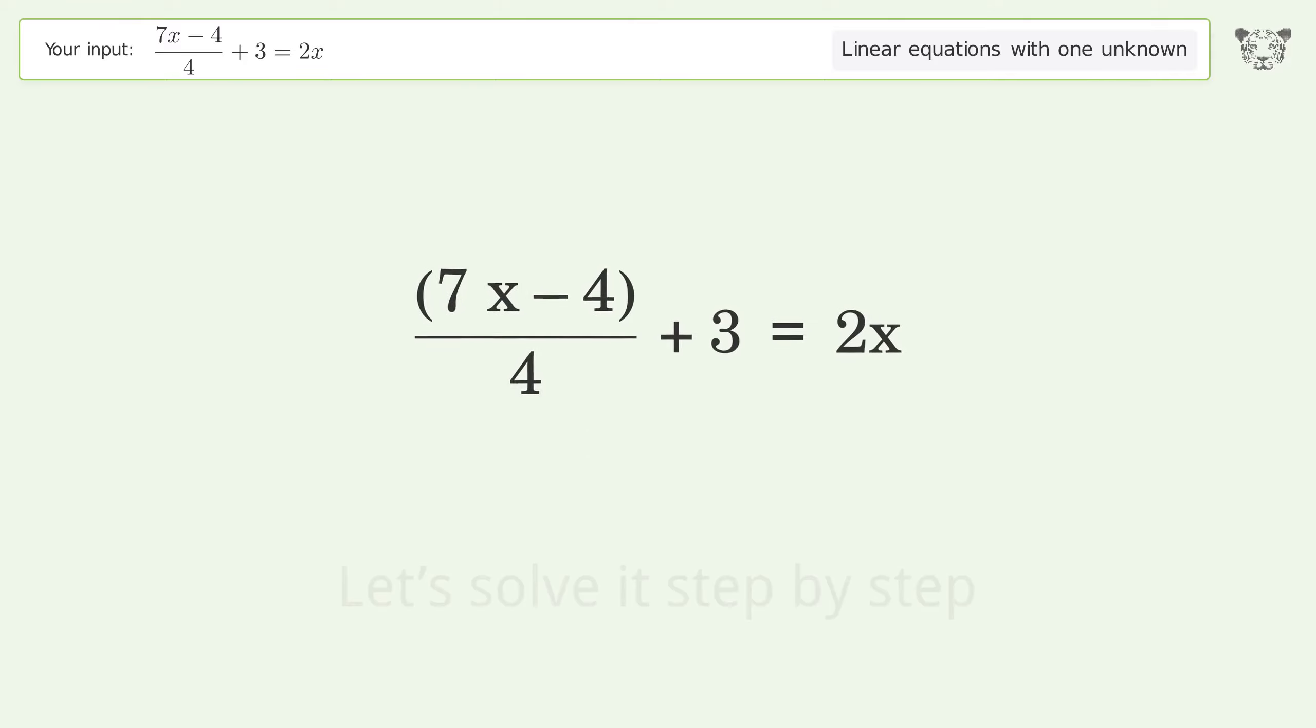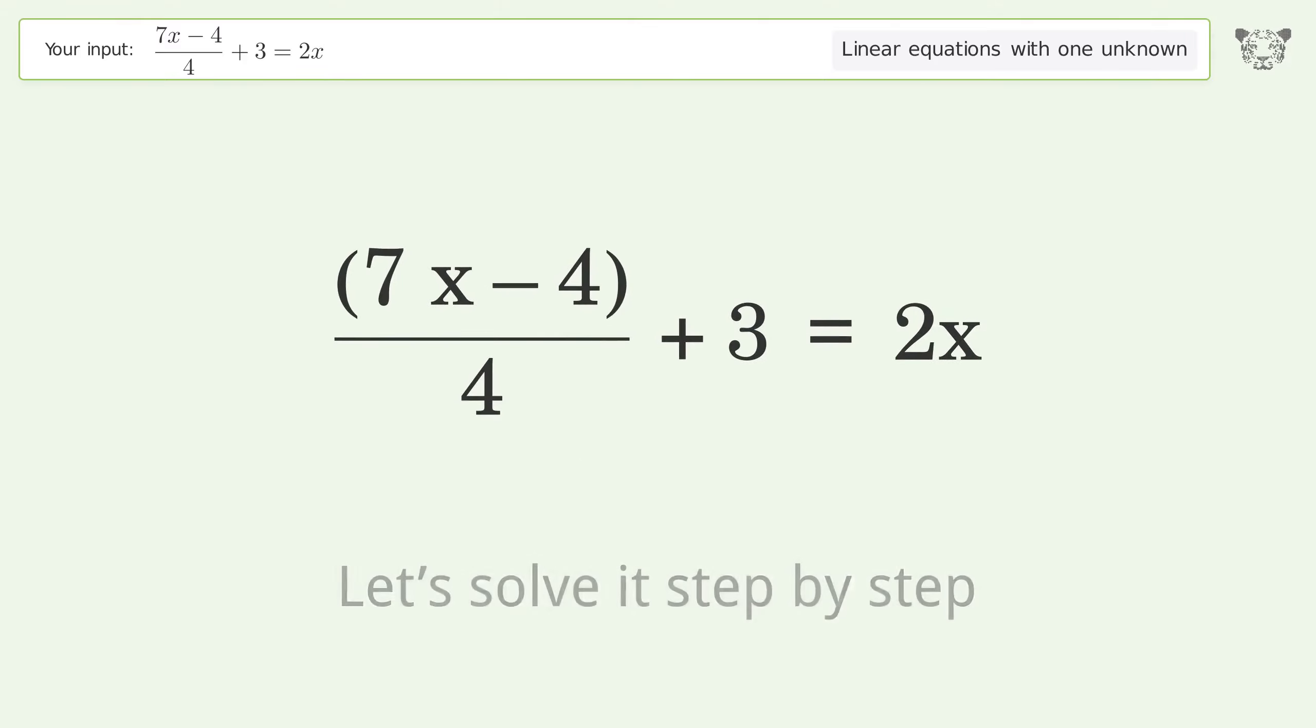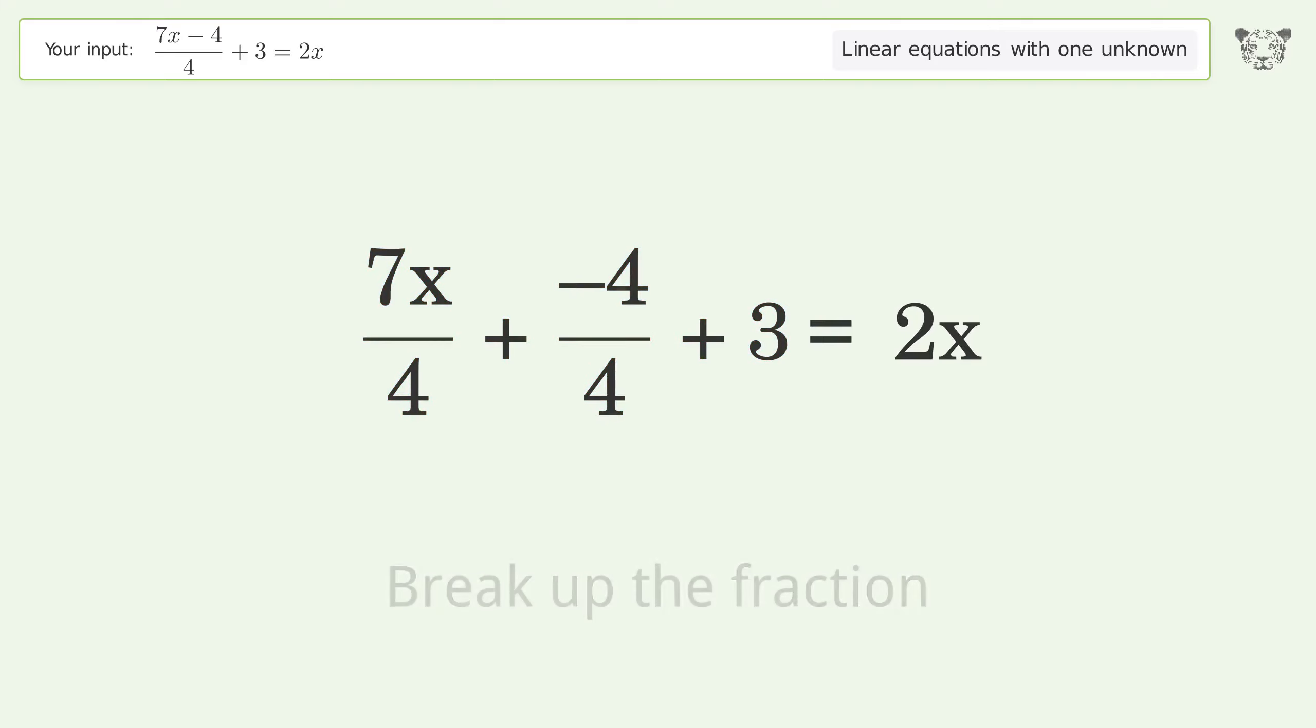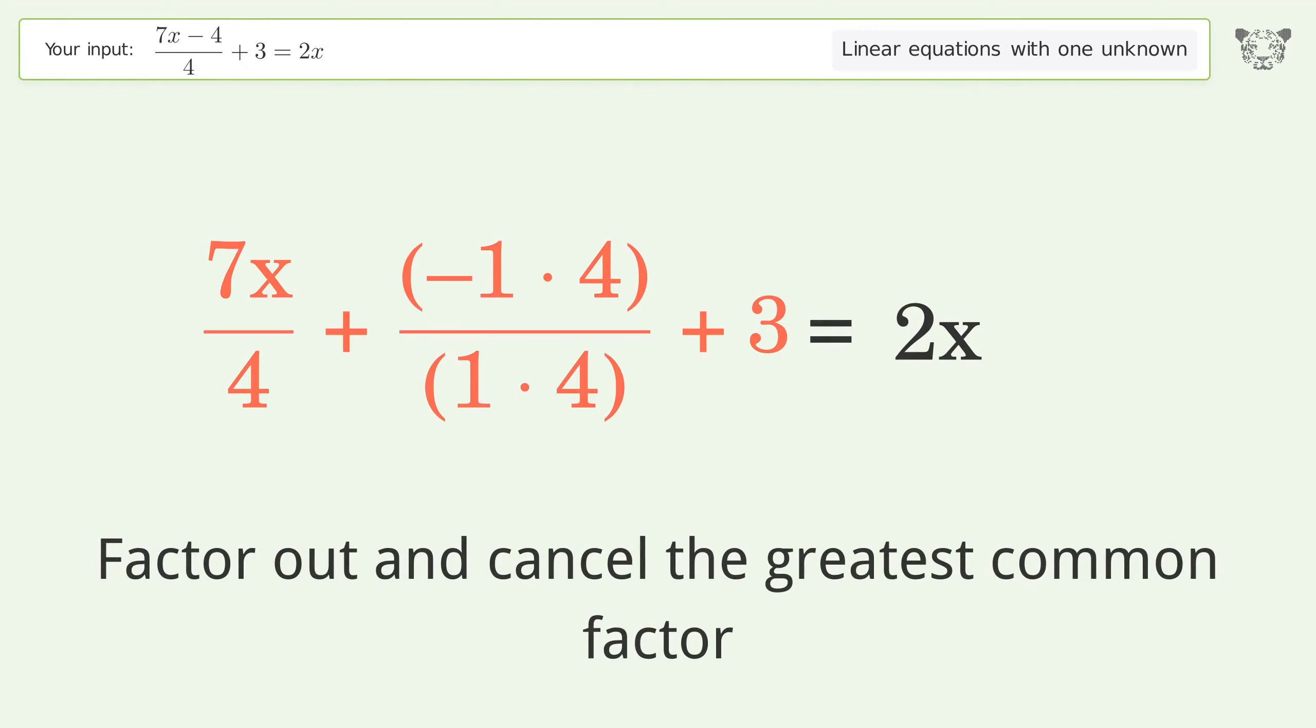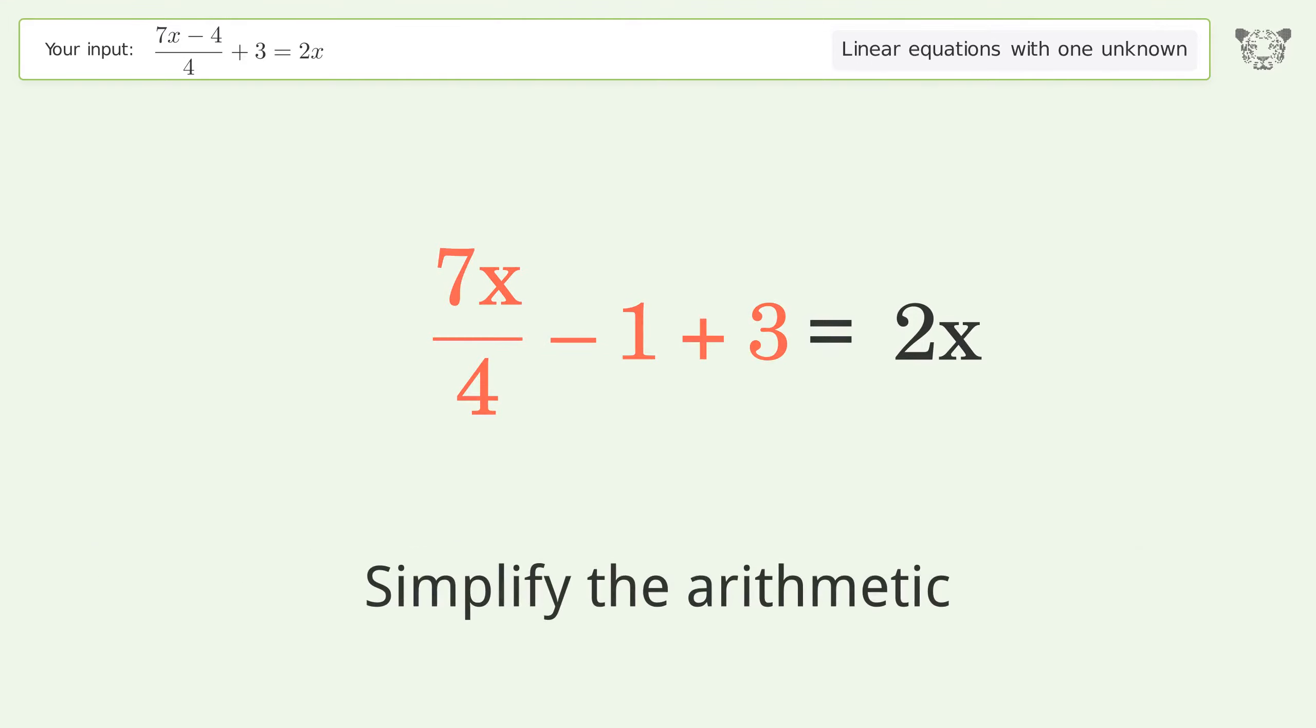Let's solve it step by step. Simplify the expression. Break up the fraction. Find the greatest common factor of the numerator and denominator. Factor out and cancel the greatest common factor. Simplify the arithmetic.